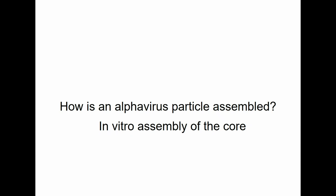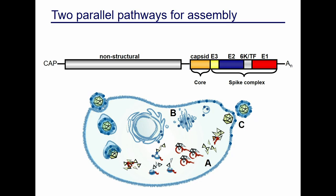How do we assemble these alphavirus particles, and how do we use an in vitro system for assembly? The alphavirus genome was introduced yesterday. What makes the alphavirus a very nice mechanistic system for studying enveloped virus assembly is that you have two parallel pathways you can recapitulate independently and add in trans if needed. In pathway A, capsid protein is translated, cleaves itself from the rest of the proteins, and as capsid protein is translated alongside replicated viral RNA, you form a pool of cytoplasmic cores.